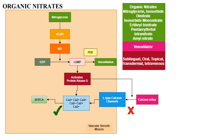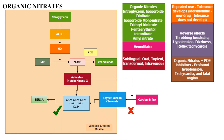The organic nitrates include nitroglycerin, isosorbide dinitrate, isosorbide mononitrate, pentaerythritol tetranitrate, and amyl nitrate — all venodilators. Different formulations are available: sublingual, oral, topical, transdermal, and intravenous. Repeated use of transdermal patches may cause tolerance. There is a newer drug called molsidomine where tolerance does not develop. Adverse effects are related to vasodilation, particularly throbbing headache.